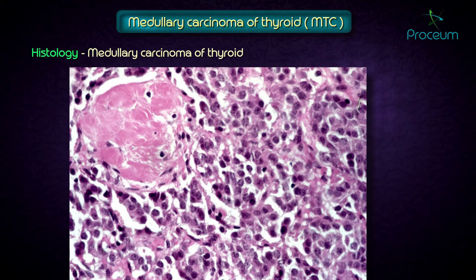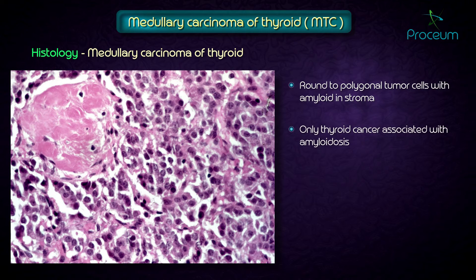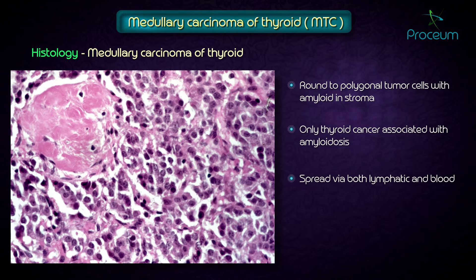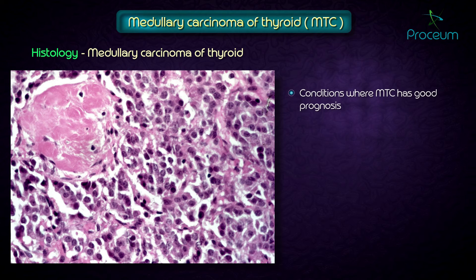Histologically, MTC shows round to polygonal tumor cells with amyloid in the stroma. It is the only thyroid cancer associated with amyloidosis. It spreads via both lymphatics and blood. Both sporadic MTC and MEN2B are more prone to metastasize compared to other types.